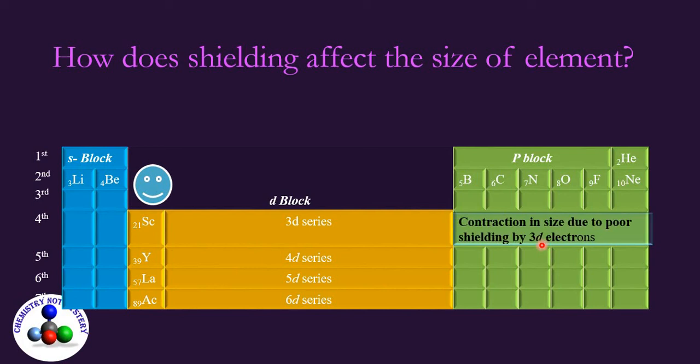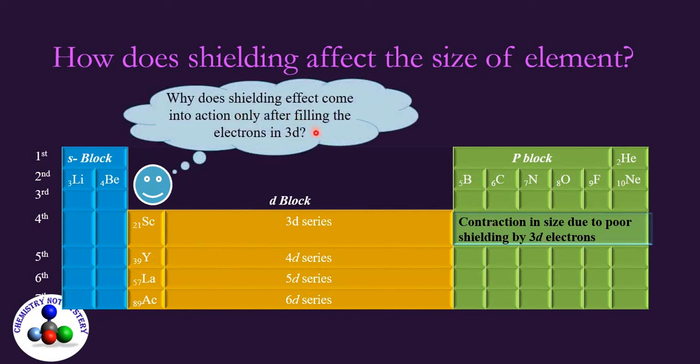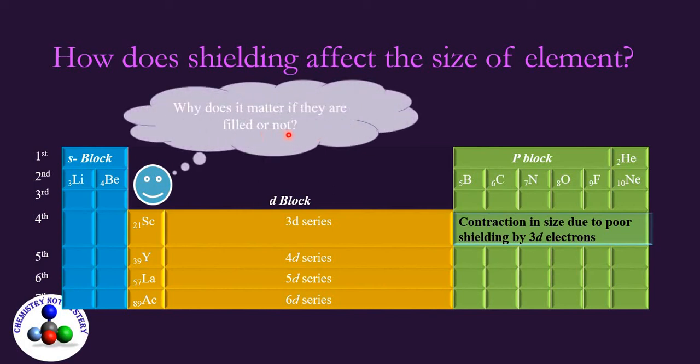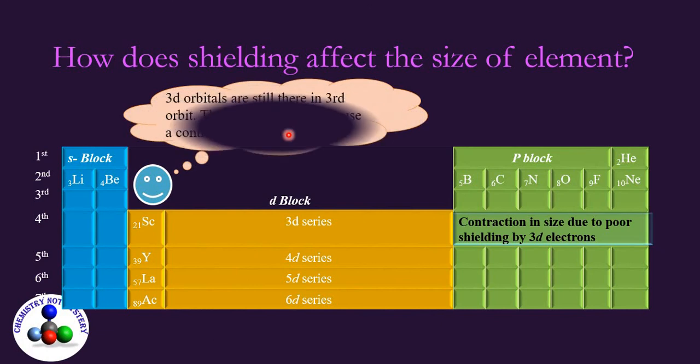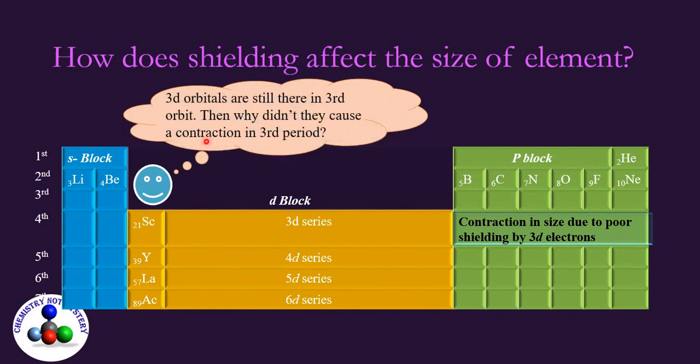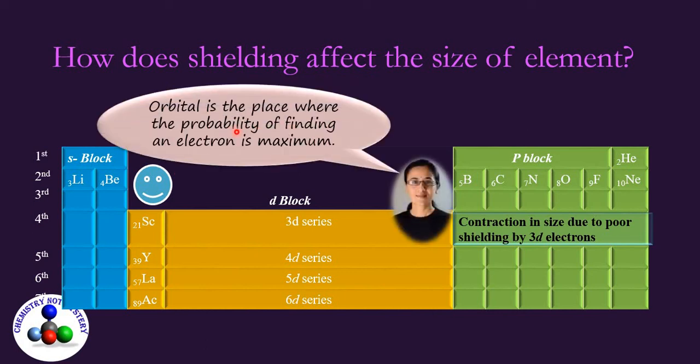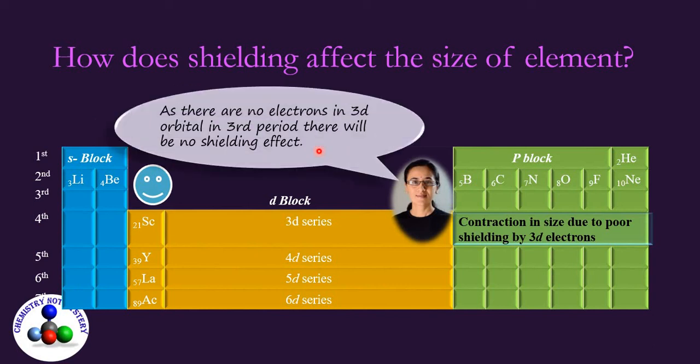You might wonder, why does it come into action only after filling the electrons in 3d? Why does it matter if they are filled or not? 3d orbitals are still there in third orbit. Then why didn't they cause contraction in third period? So I want to remind you that the orbital is the place where the probability of finding an electron is maximum. And if there is no electron, there would be no orbital either. And as there are no electrons in 3d orbital in third period there will be no shielding effect.